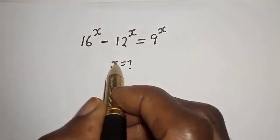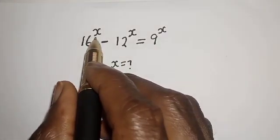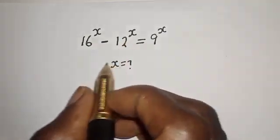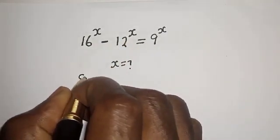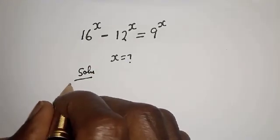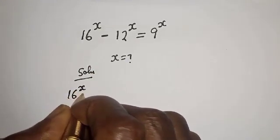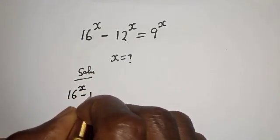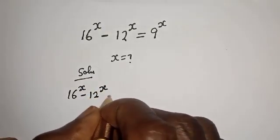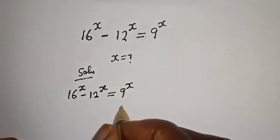Hello. How to solve for x from this equation: 16 raised to power x minus 12 raised to power x is equal to 9 raised to power x. Solution: we have the given equation 16 raised to power x minus 12 raised to power x is equal to 9 raised to power x.